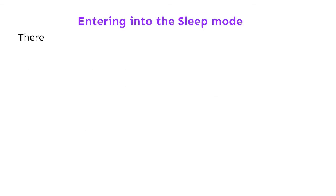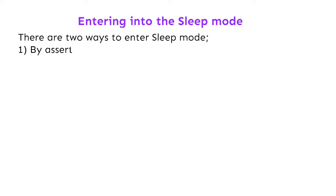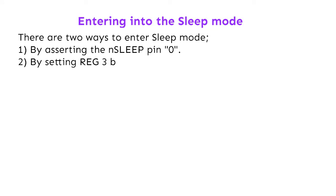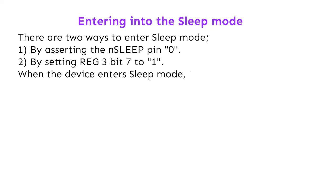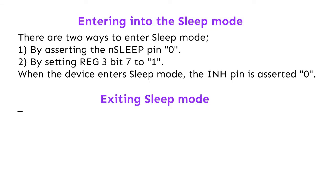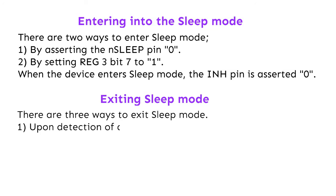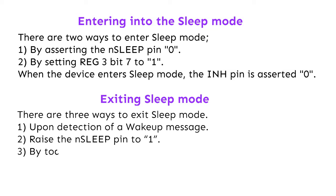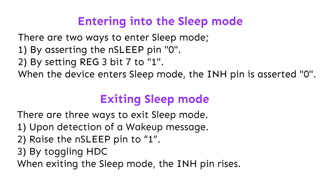Entering sleep mode: there are two ways — 1) by asserting the nSLEEP pin to 0, or 2) by setting REG 3, Bit 7 to 1. When the device enters sleep mode, the INH pin is asserted low (0). Exiting sleep mode: there are three ways — 1) upon detection of a wake-up message, 2) raise the nSLEEP pin to 1, or 3) by toggling HDC. When exiting sleep mode, the INH pin rises.